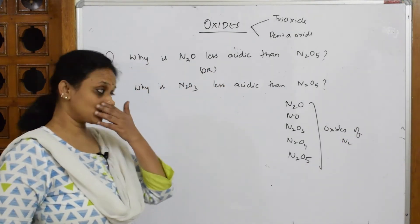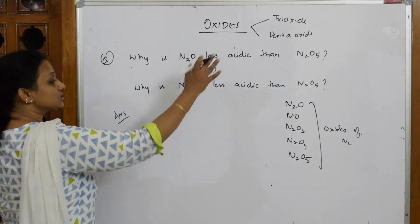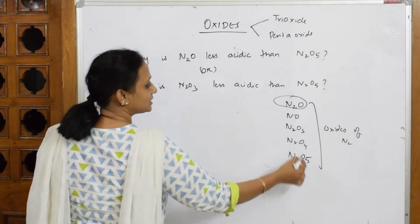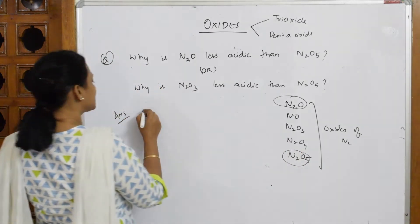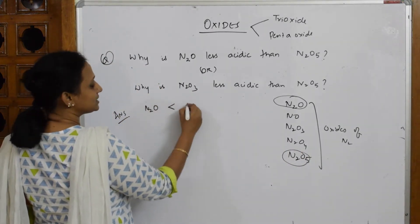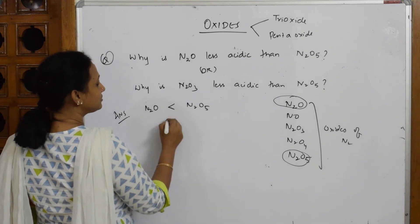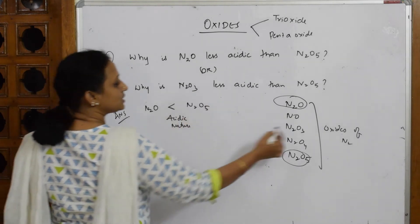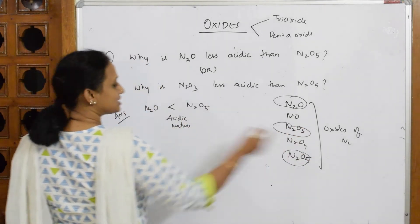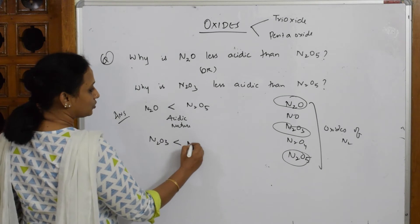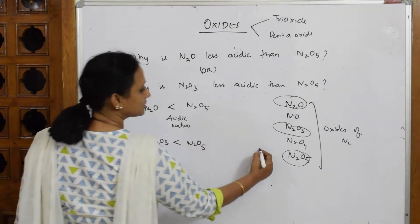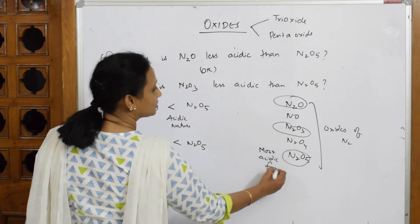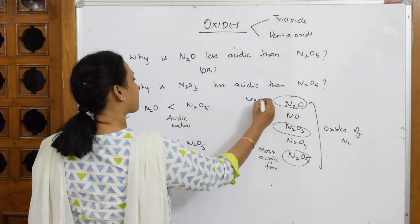Now, what did they ask me? Among the oxides of nitrogen, which comparison have they asked? They've asked me N2O is less acidic than N2O5 in terms of acidic nature. One more question, same thing: N2O3 is less acidic than N2O5. That means N2O5 is the most acidic form.